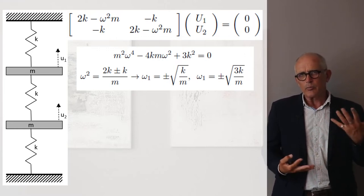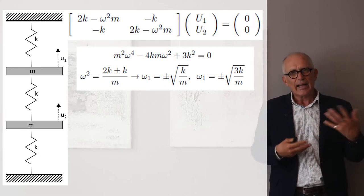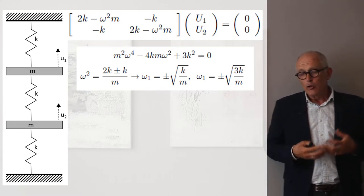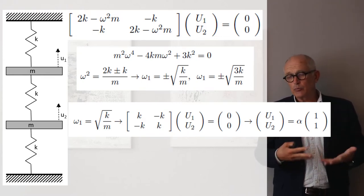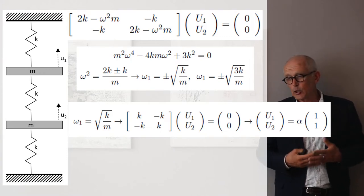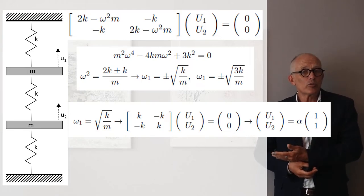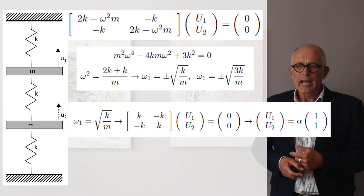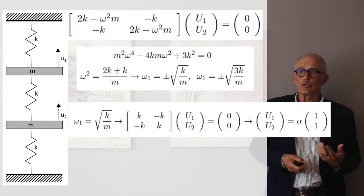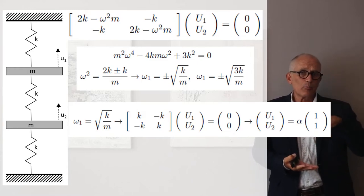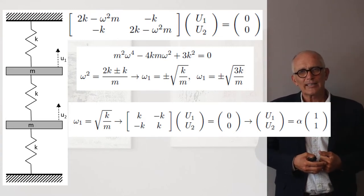Now how does the system behave, how do the two masses move with respect to one another at each of these frequencies? So to do that we have to replace omega by, for instance, square root of k over m and we then see that the system of equations becomes k times u1 minus k times u2 is equal to zero. And we see that we have an infinite number of solutions for that because any solution where the two masses are moving in phase with exactly the same amplitude is going to be a solution at that frequency.